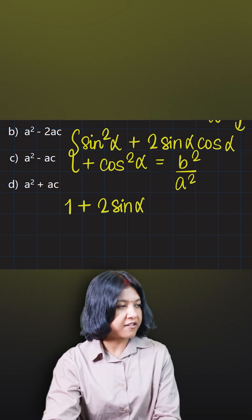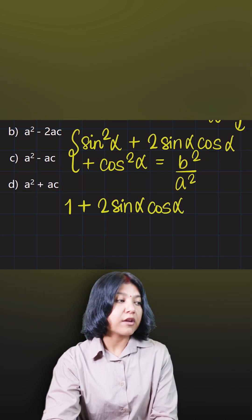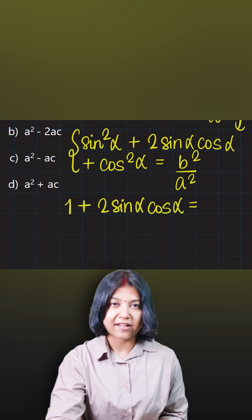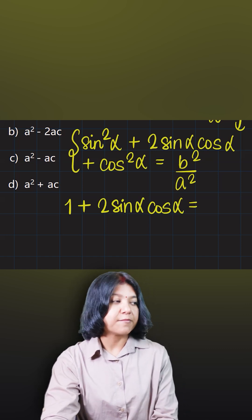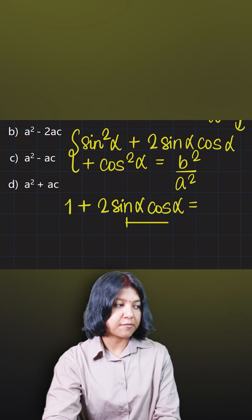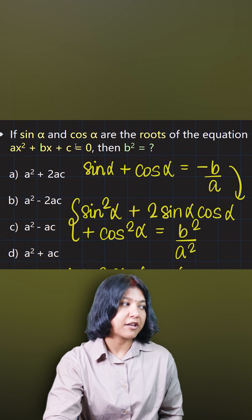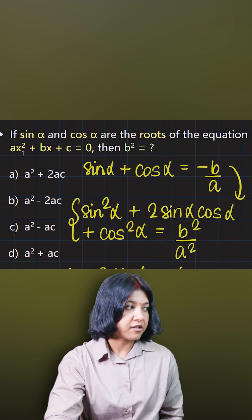Now, how to find the value of sin α cos α? Just like we found out the sum of roots using the middle coefficient or the coefficient of x upon coefficient of x squared, the product of roots—now this is nothing but product of roots—can be found out by taking the ratio of the constant upon the first term.